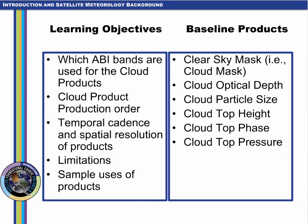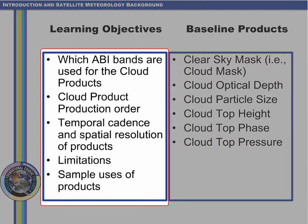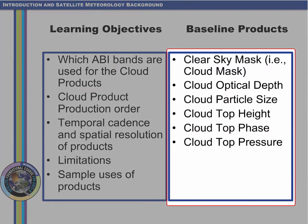Learning objectives for this training are listed on the left. You'll learn which ABI bands are used for the products, how the products are produced, there is a specific order, the temporal and spatial resolution, and some sample uses and limitations. GOES-R baseline products are listed on the right — these are the products that will be available on AWIPS. Future capabilities products are also described in this training, and you can find baseline and future capability products online.